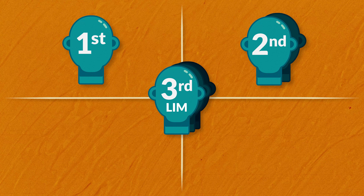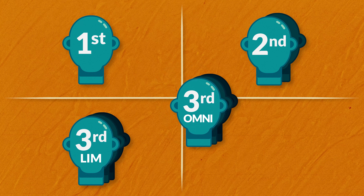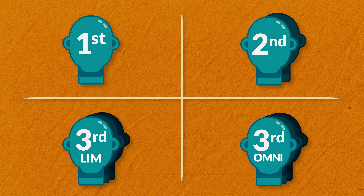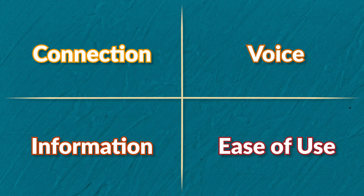There are four major points of view we'll cover in this video: first person, second person, and third person, which breaks down into limited and omniscient. To understand which POV to choose, let's look at each through four different qualities: connection, voice, information, and ease of use.